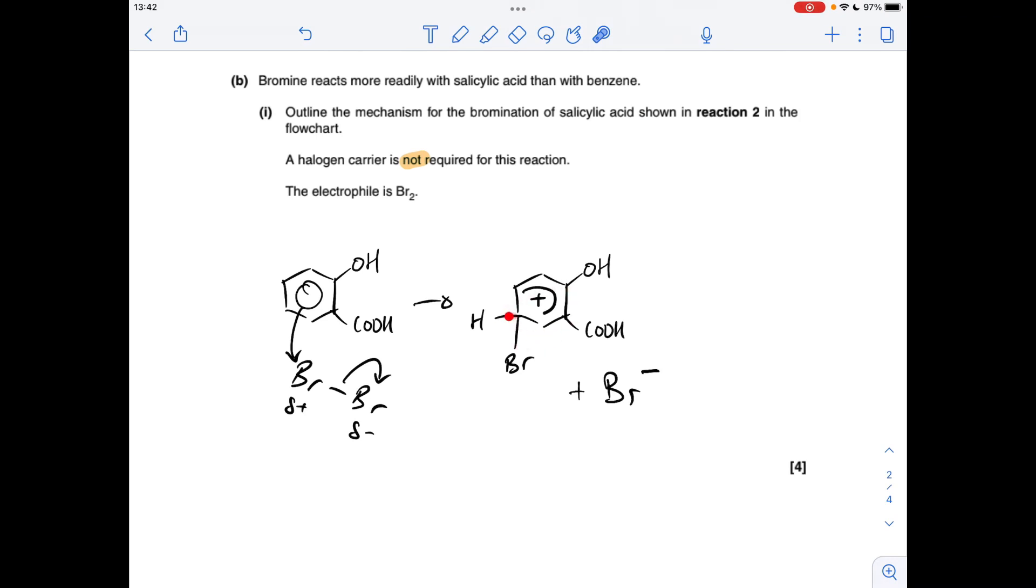So all we need to do now is take a pair of electrons from this carbon-hydrogen bond and put them back to reform the delocalised ring of pi electrons. So the upshot of that is the product and an H+ ion from the loss of this H from the benzene ring, and obviously the HBr molecule is formed from the combination of those two ions.